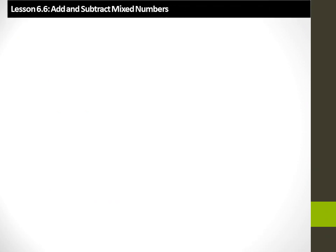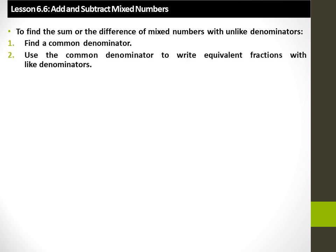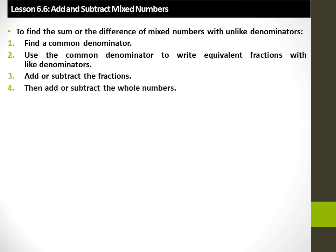Add and subtract mixed numbers. To find the sum or difference of mixed numbers with unlike denominators: 1. Find the common denominator. 2. Use the common denominator to write equivalent fractions with like denominators. 3. Add or subtract the fractions. 4. Add or subtract the whole numbers. 5. Write the answer in simplest form.